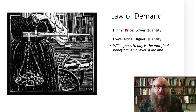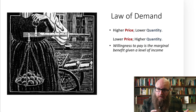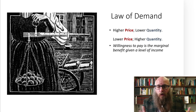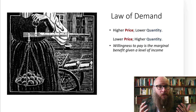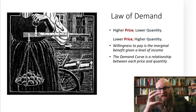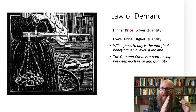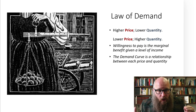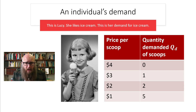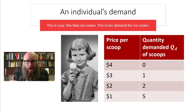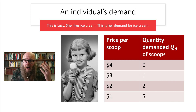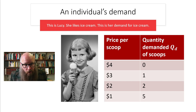The willingness to pay is the marginal benefit at a given income level — it's another way of describing people's demand. We can plot an entire relationship of different prices and different quantities that people are willing to pay. Let's look at Lucy. She likes ice cream, and this is her demand schedule. When the price is a dollar, she will buy five. But when the price is four, she either can't afford it or it's not worth it.